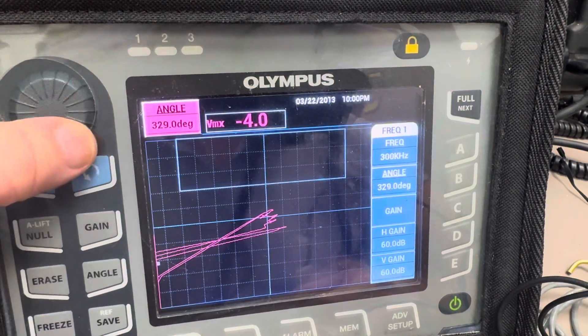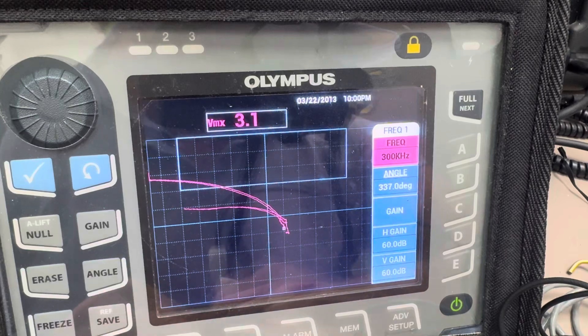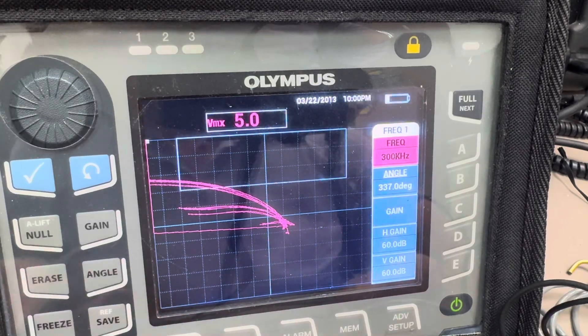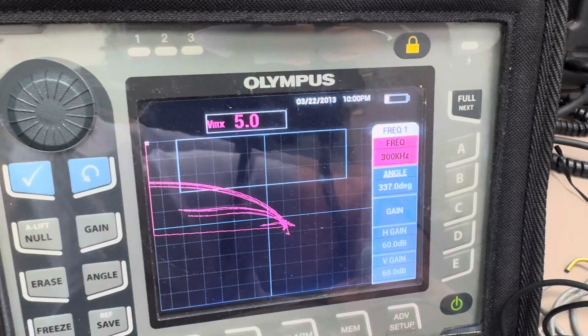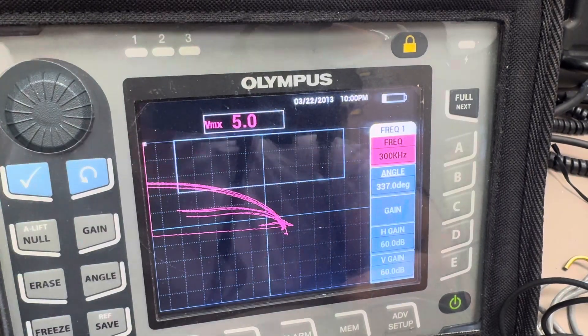So first I'll adjust the angle in the carbon steel just so you can see. Yeah, same flaws, they'll just... actually that's titanium, I gotta grab carbon steel. This one's carbon steel.